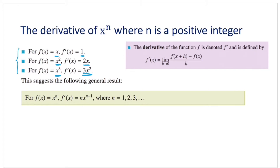So there is a general rule which states that when we're finding the derivative of x to the power of n, where n is a positive integer, we bring the power to the front and reduce the power by 1. For example, in the first question, we have f of x is equal to x, and the derivative f dash of x is going to be — x can be written as x to the power of 1. If we bring 1 to the front, and the power becomes 1 minus 1, we know 1x to the power of 0 is simply 1.